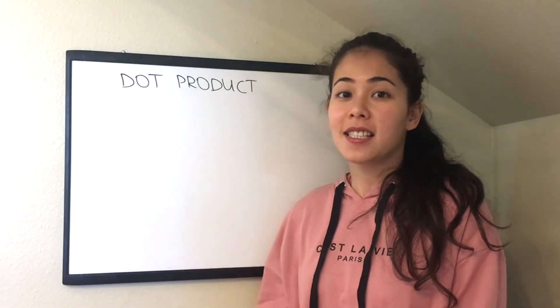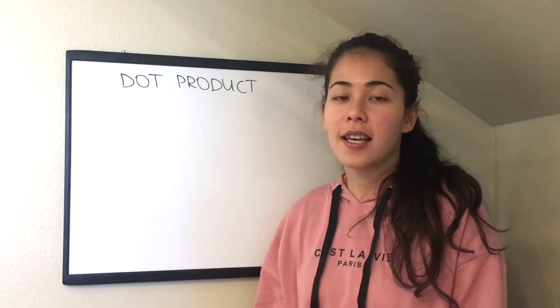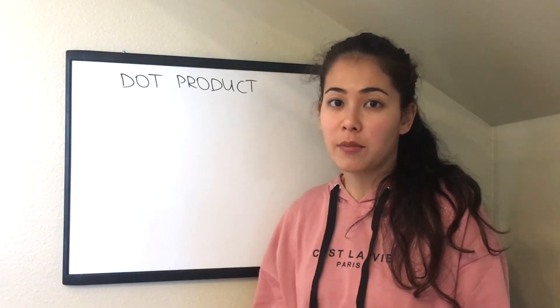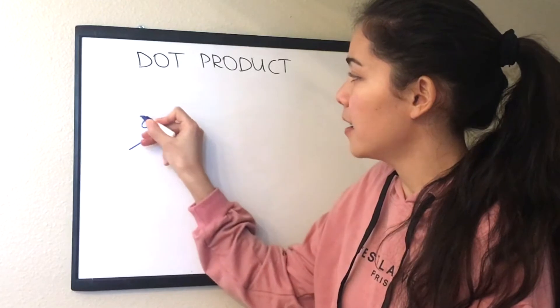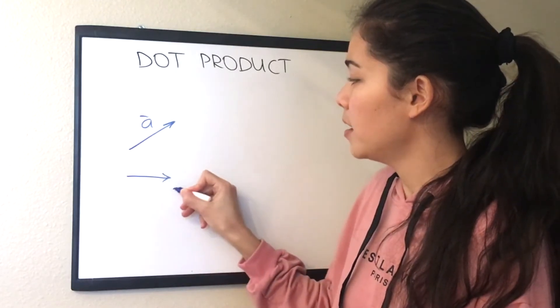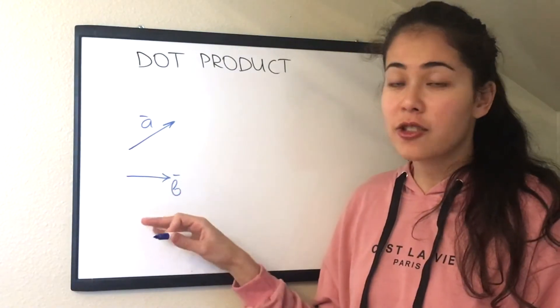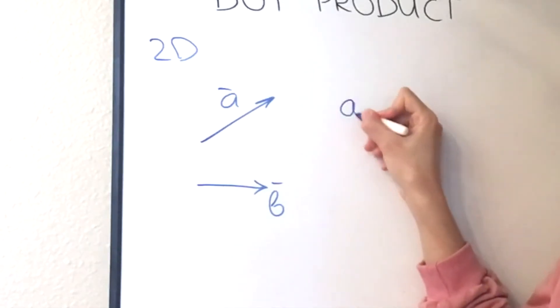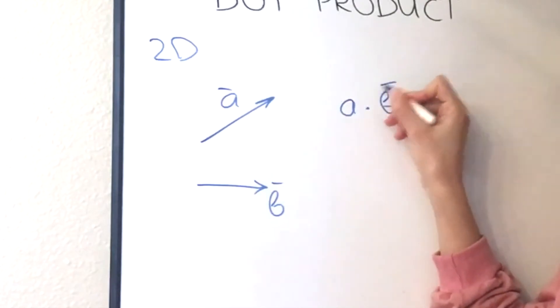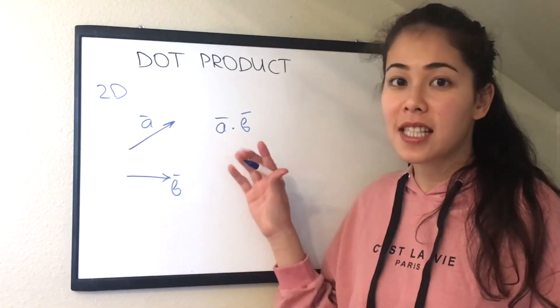So dot product is a product between two vectors and it's denoted by a dot between those vectors. Let's say we have a vector a and a vector b, random vectors in the 2D plane. Then the dot product will be a dot b. Now what is it equal to?